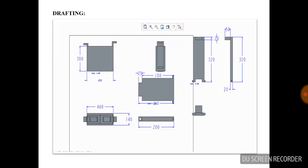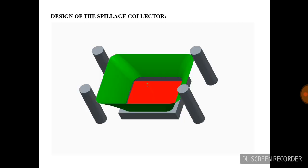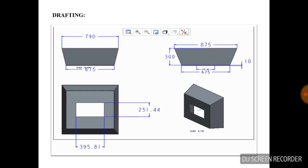This slide represents the dimensions of the different parts of the container. This is our other prototype, the spillage collector, which will be placed on the hydraulic pressing mold. The green color represents parts made of aluminum and the red color represents rubber sheet, which is connected to the aluminum by bolt joints. This slide gives information about the dimensions of the spillage collector. When seen in a front view, it is in a trapezoidal shape. When seen in a top view, it is in a rectangular shape. The rubber sheet has a rectangular cut which is useful to hold the mold in a fixed position.